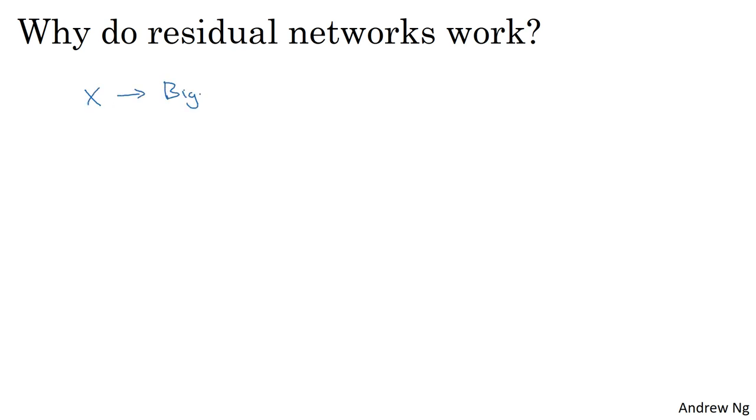Let's say you have x feeding in to some big neural network and this outputs some activation AL. Let's say for this example that you're going to modify the neural network to make it a little bit deeper. So you have the same big NN and this outputs AL and we're going to add a couple extra layers to this network.